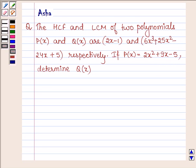Hello and welcome to the session. The given question says: the HCF and LCM of two polynomials P(x) and Q(x) are 2x - 1 and 6x³ + 25x² - 24x + 5 respectively. If P(x) = 2x² + 9x - 5, determine Q(x).